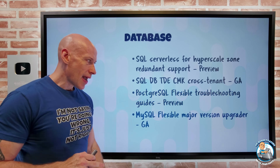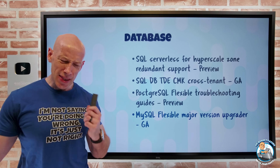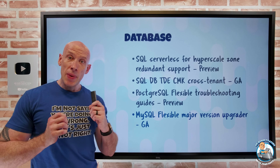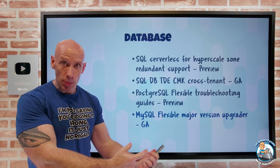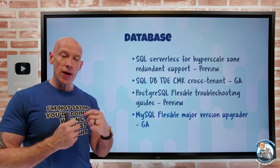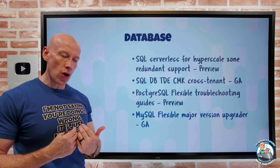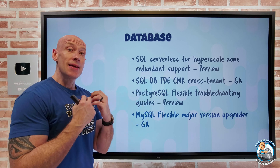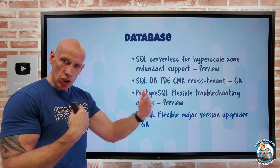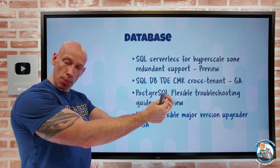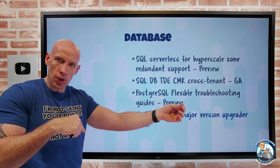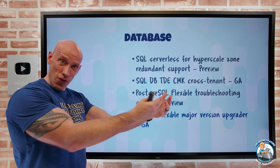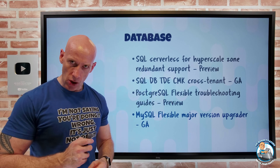MySQL Flexible now has a major version upgrade feature that's GA. You can go from version 5.7 to 8.0 using the portal or the CLI. It can also be performed on a read replica — and if you have read replicas, you must perform the upgrade on the read replicas before doing the primary. There is also a minimal downtime version: it upgrades the read replica first, ensures synchronization is complete, switches the primary to the replica so the primary is now running 8.0, then upgrades what was the primary, and then fails back. The only downtime is stopping the app, finishing replication, and failing over.